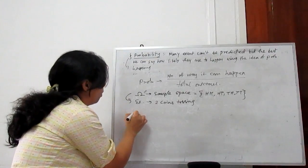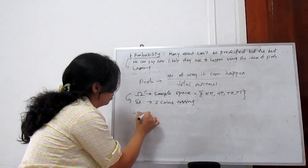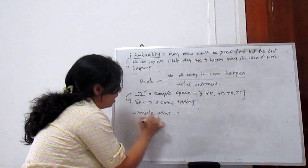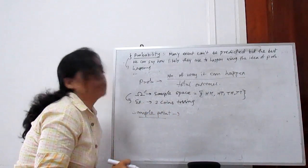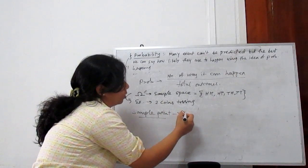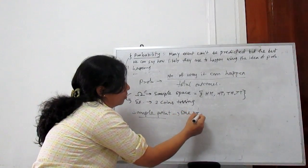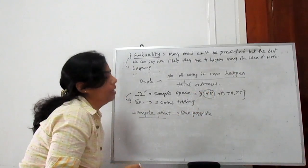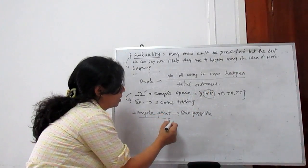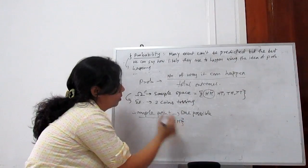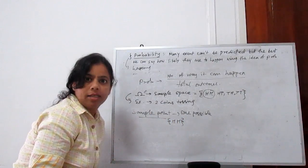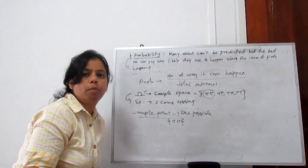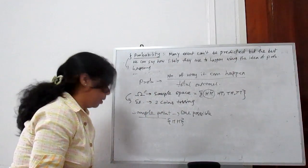Next is the sample point. A sample point is only one outcome — just one possible outcome, not all. For example, coming head-head: that sample point is head-head. There are many sample points in one sample space, meaning in one problem we can find many sample points.